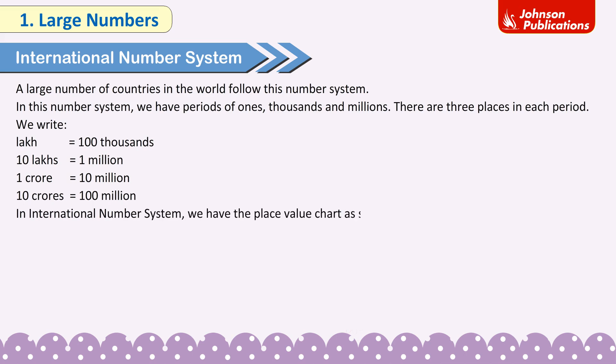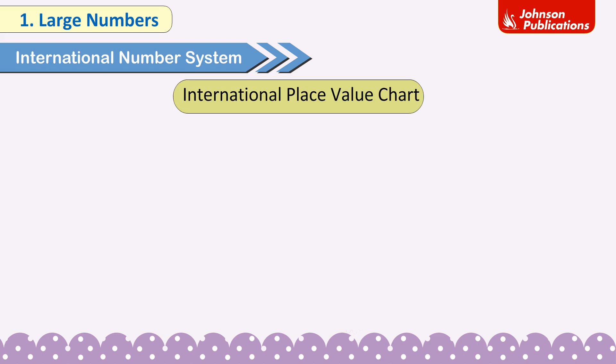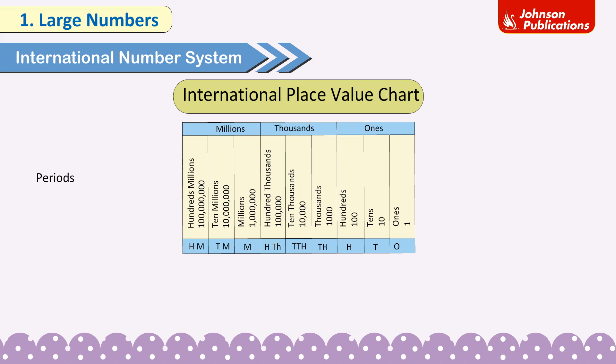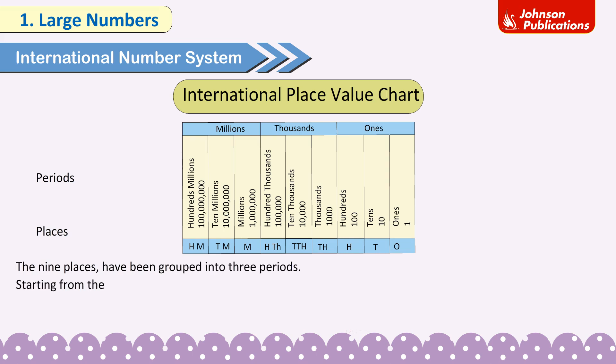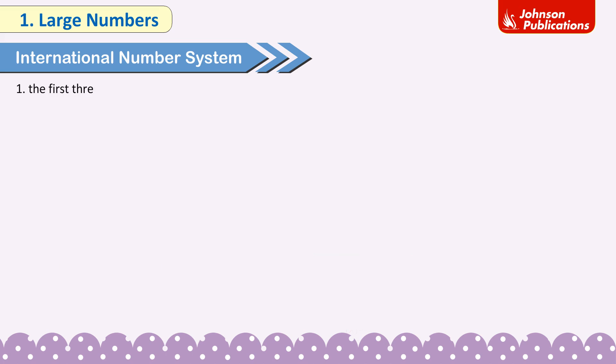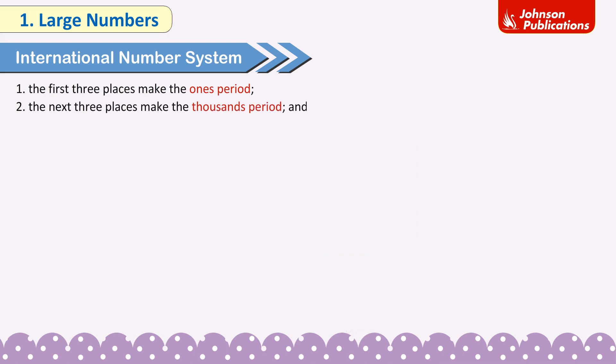International place value chart — Periods: Millions, Thousands, Ones. Places: 100 millions (HM), 10 millions (TM), Millions (M), 100 thousands (HTH), 10 thousands (TTH), Thousands, Hundreds (H), Tens (T), Ones (O). The nine places have been grouped into three periods starting from the right: 1. ones period, 2. thousands period, 3. millions period.